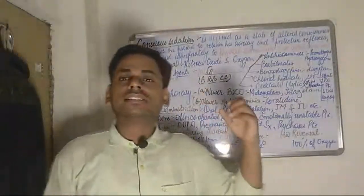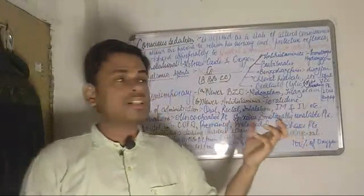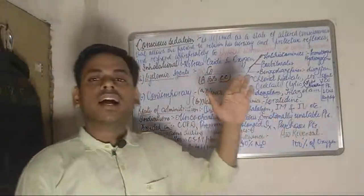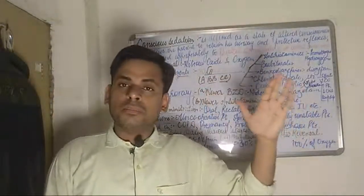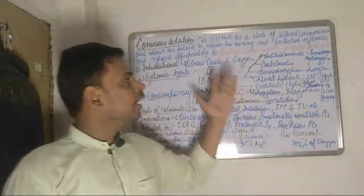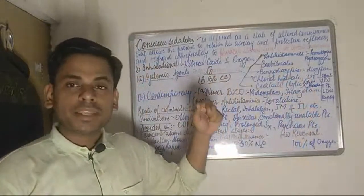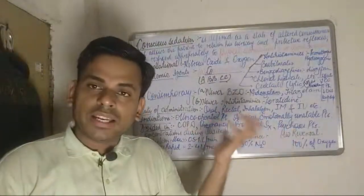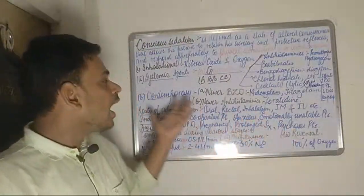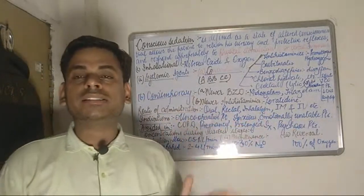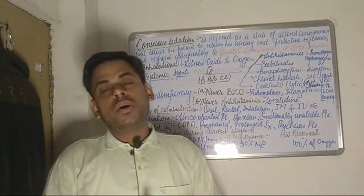Under the next category we have systemic agents, which can be broadly subdivided into conventional systemic agents — those used since a very long time — and contemporary systemic agents, which have been developed more recently.